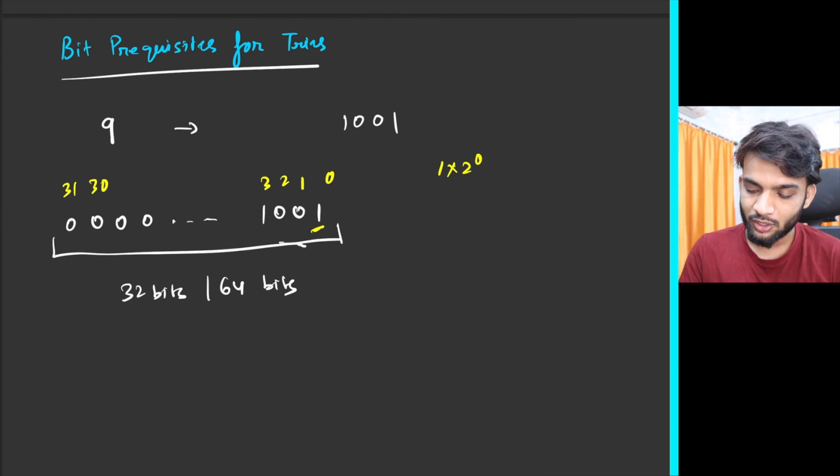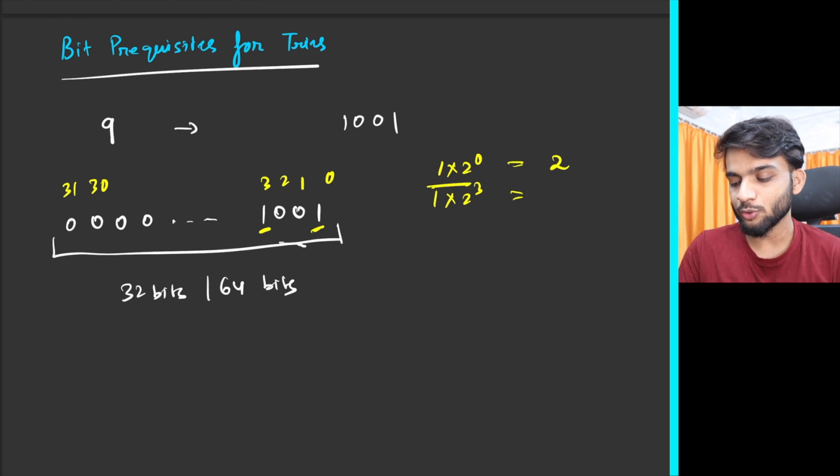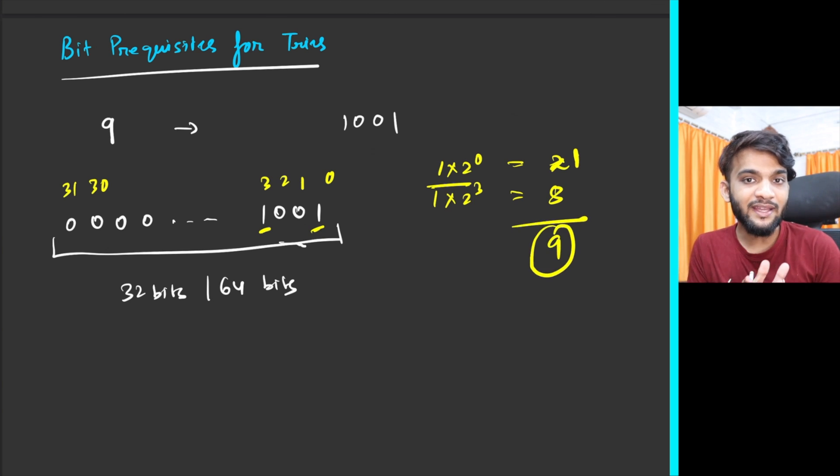Whenever I say 32 bits, the indexing goes like 0, 1, 2, 3, and so on till 31. The indexing goes from right to left. This is 1 times 2 to the power 0, this is 1 times 2 to the power 3. 1 times 2 to the power 0 gives you 1, 1 times 2 to the power 3 gives you 8, so 8 plus 1 gives you 9.